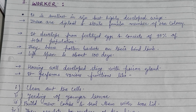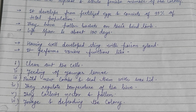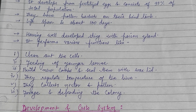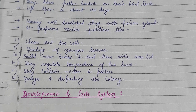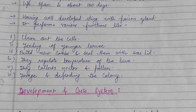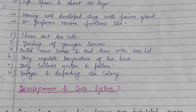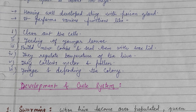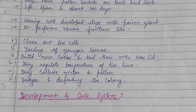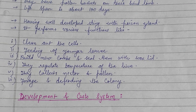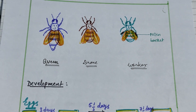The worker is smaller in size and is a sterile female member of the colony. It has well-developed stings and a poison gland, and performs various functions: cleaning out cells, feeding younger larvae, building new combs, sealing them with wax, regulating the temperature of the hive, collecting nectar and pollen, foraging, and defending the colony.